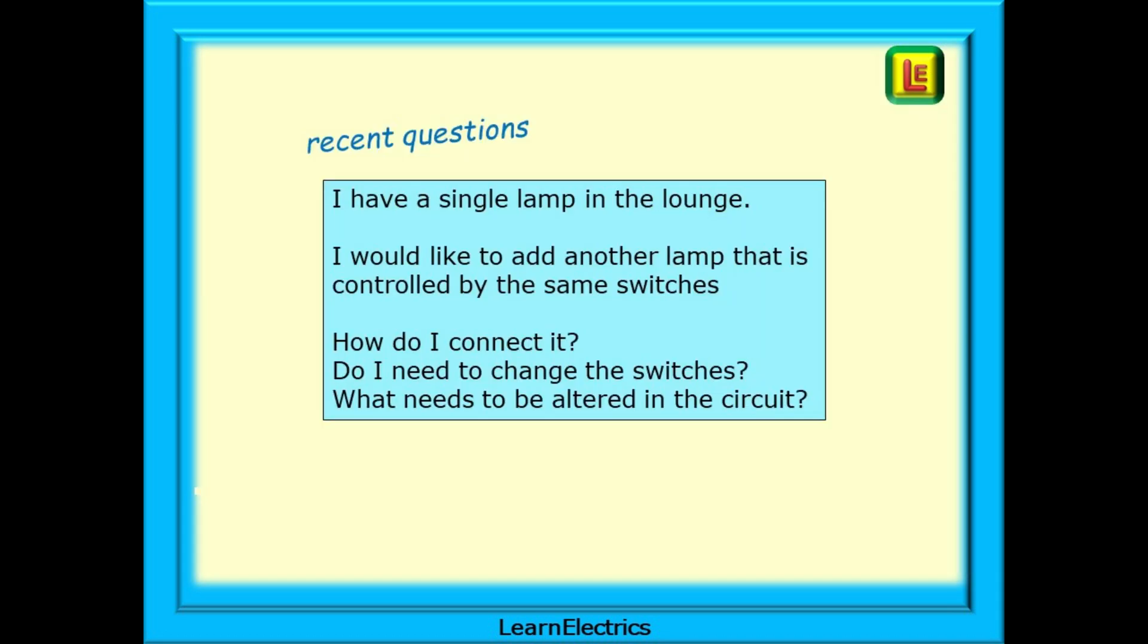Some recent questions that have been asked can be summed up like this. I have a single lamp in the lounge. I would like to add another lamp that is controlled by the same switches that I already have. How do I connect it? Do I need to change the switches and what needs to be altered in the circuit?